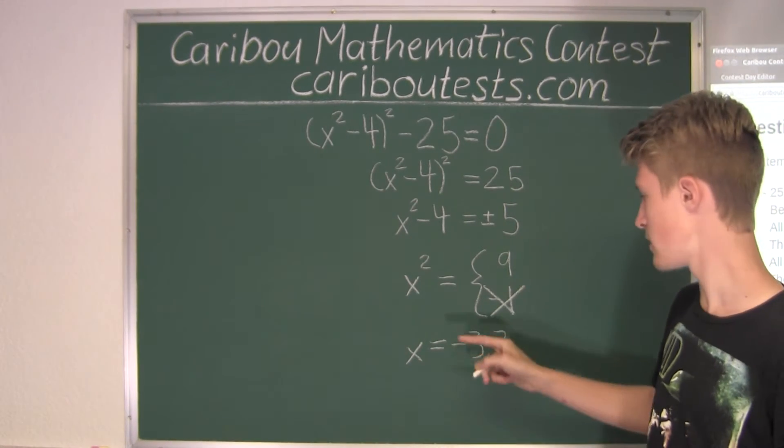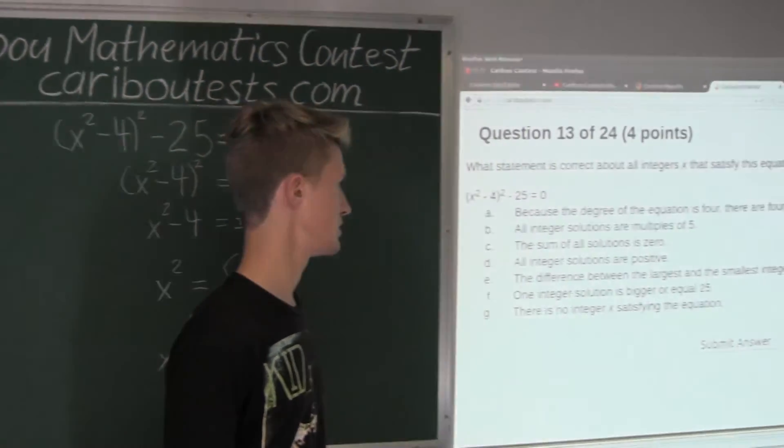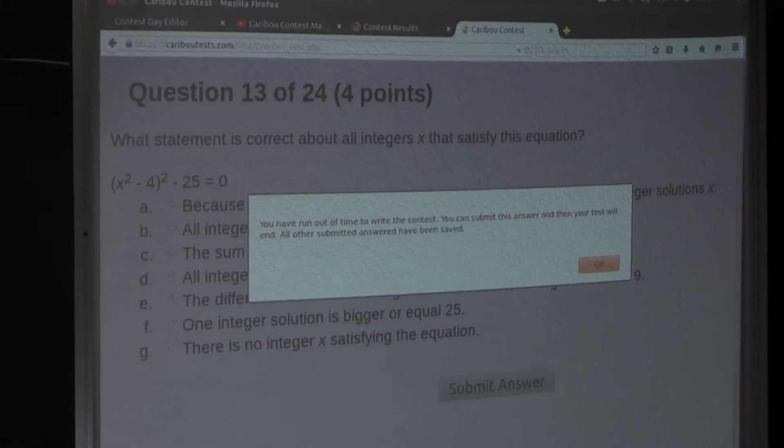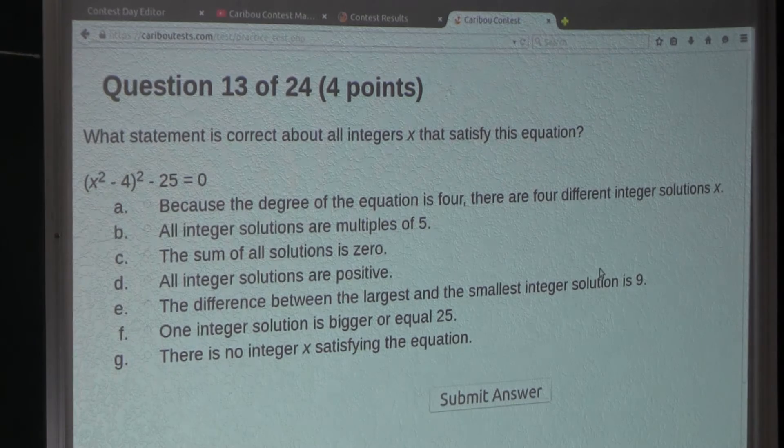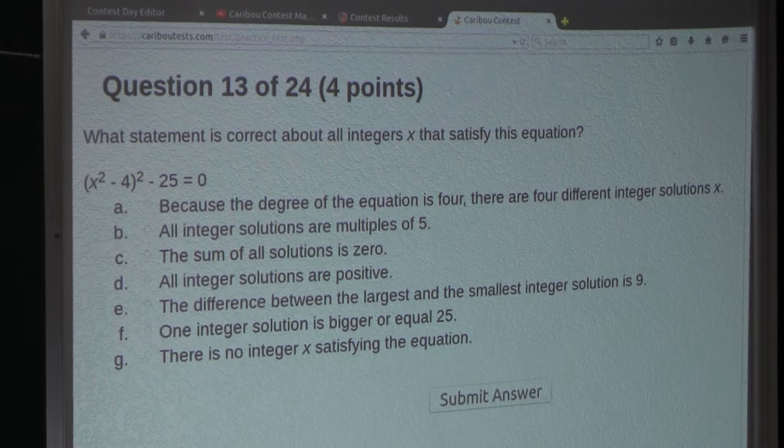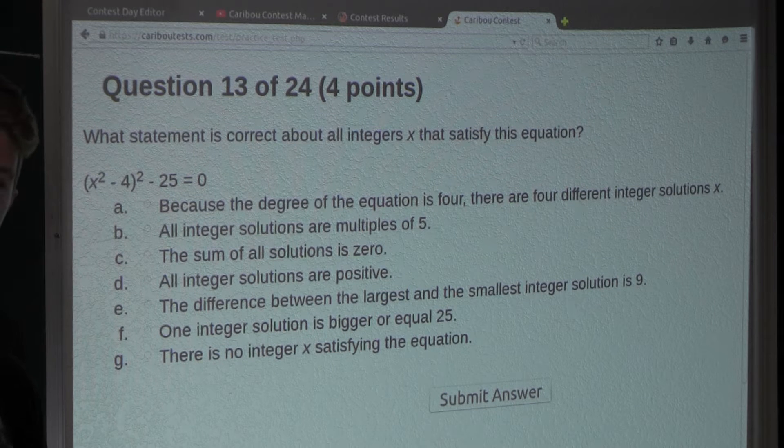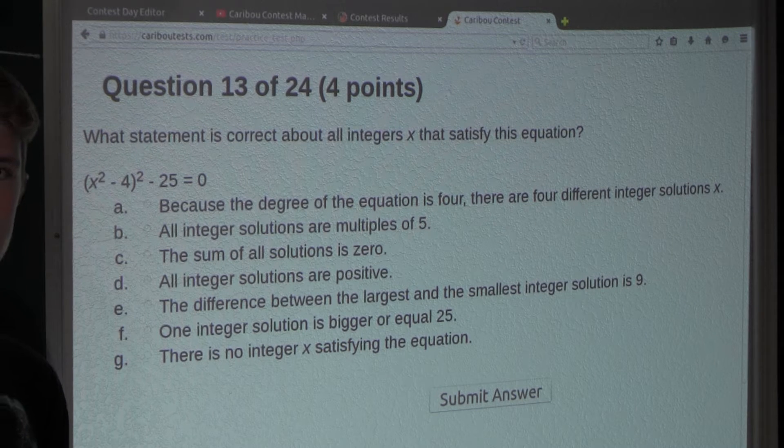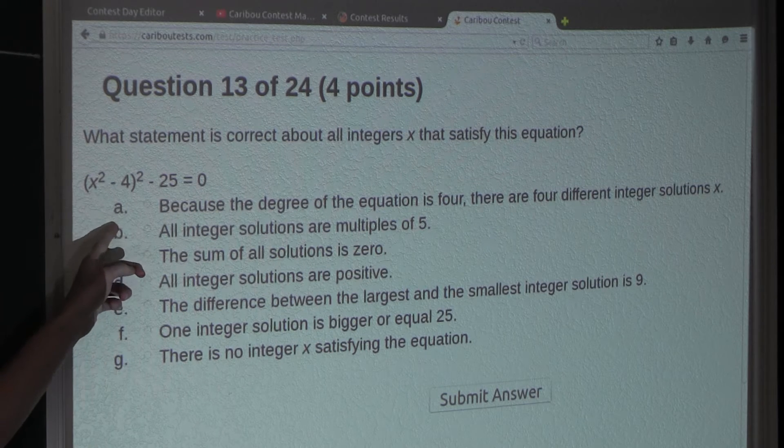So the two solutions are negative 3 and 3. Now let's take a look at the options. Option A: Because the degree of the equation is 4, there are four different integer solutions x. Well, this does not have to be true, because, for example, when x to the power of 4 equals 0, every single x would have to be equal to 0, and there wouldn't be four different solutions. So therefore, option A is false.